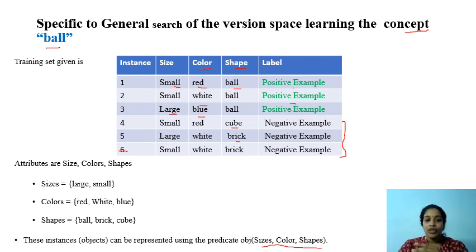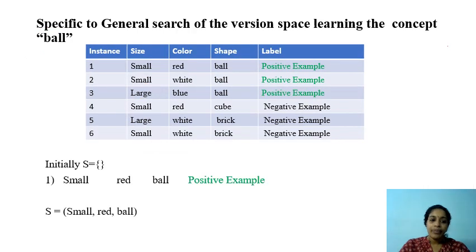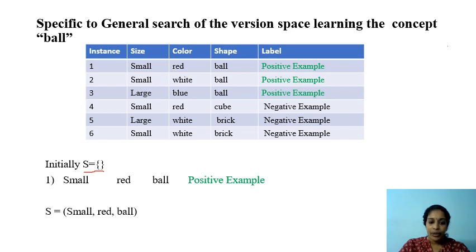In this problem we want to find a concept that can describe the concept 'bowl'. To recap the specific-to-general algorithm: we start from the most specific hypothesis, and on seeing each positive example we check whether the hypothesis can accept that positive instance. For each negative example we check whether our hypothesis rejects it.